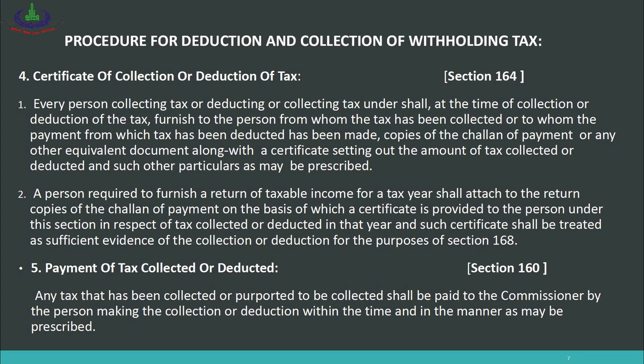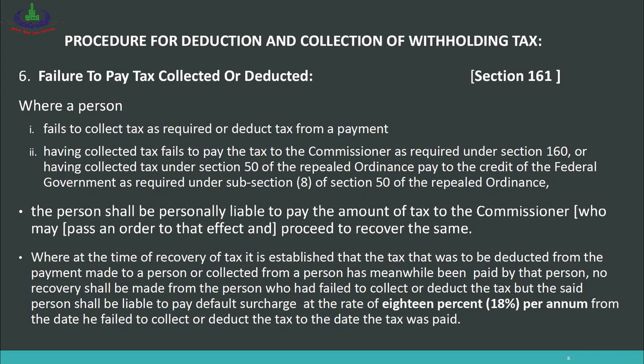Section 160 covers payment of tax collected or deducted. Any tax that has been collected or purported to be collected shall be paid to the Commissioner by the person making the collection or deduction within the time and in the manner as may be prescribed. Every withholding agent who deducts or collects tax must deposit it to the Commissioner Inland Revenue at FBR offices within the stipulated time.